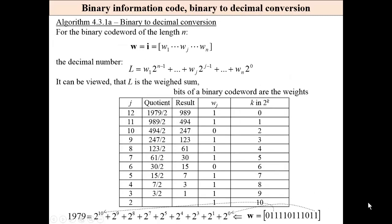Now binary to decimal conversion. For the binary word of length n, the decimal number is a weighted sum. Bits are weights. This bit should be multiplied by 2 to the power of 0, which is 1.